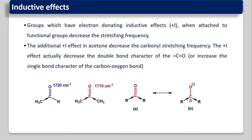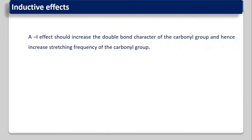The structural effects which increase double bond or triple bond character will increase the IR stretching frequency, but if a structural effect decreases the multiple bond character towards single bond character, then the IR frequency also decreases. A minus I effect should increase the double bond character of the carbonyl group and hence increase its stretching frequency. So, +I effect decreases IR frequency while -I effect increases IR frequency.